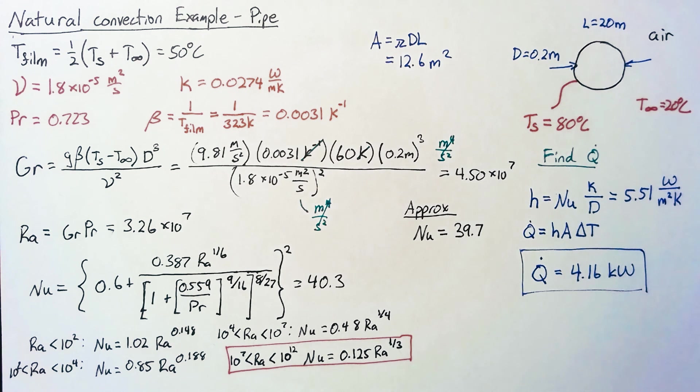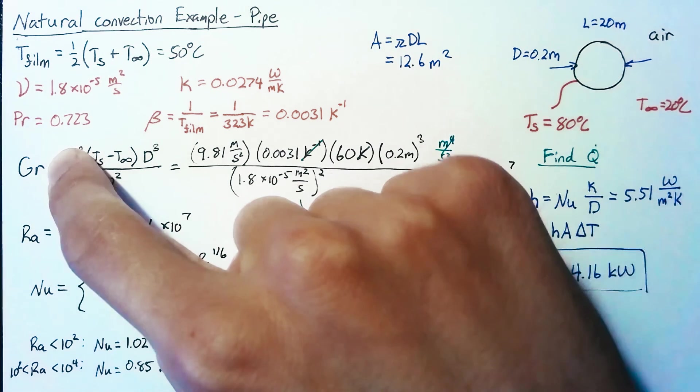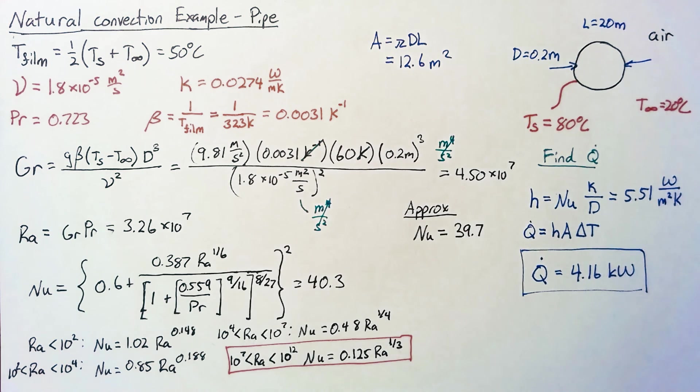So that's the process that we're going to be taking for all of these problems. It's really similar to forced convection, except instead of using the Reynolds number before the Nusselt number, we go through this process of Grashof and Rayleigh. So I hope this was helpful as a first step towards solving some of these problems.